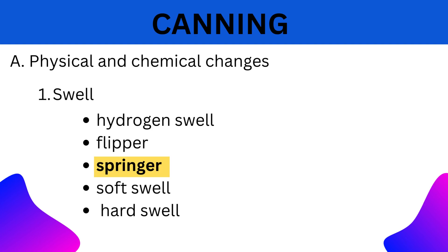3. Springer: A mild swell at one or both ends of a can is called a springer, which may be the initial stage of hydrogen swell or be due to insufficient exhausting or overfilling of the can. The bulged ends can be pressed to the normal position but will again become convex after some time.